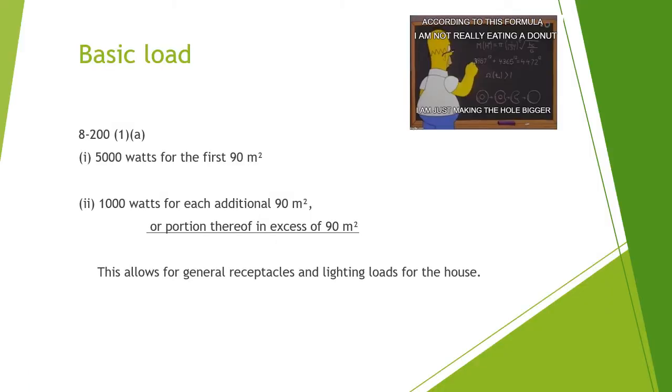Let's do an example. In 8-200, it states that the calculated load for a service or feeder supplying a single dwelling shall be based on the greater of item A or B. So item A, we're going to be doing all these calculations for.